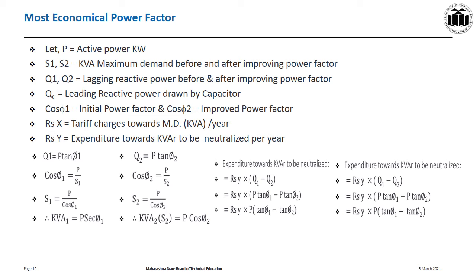cos φ₁ is the initial power factor, cos φ₂ is the improved power factor. Keep in mind φ₁ is greater than φ₂, and cos φ₁ is less than cos φ₂. This derivation is done to make the power factor value higher.